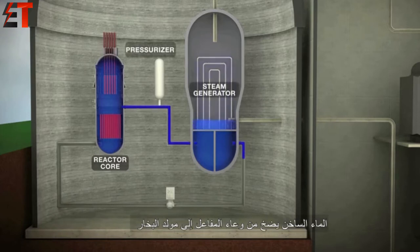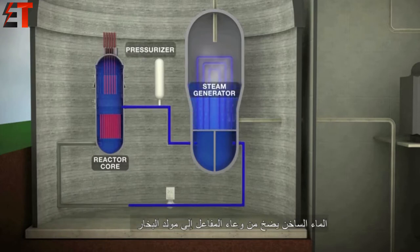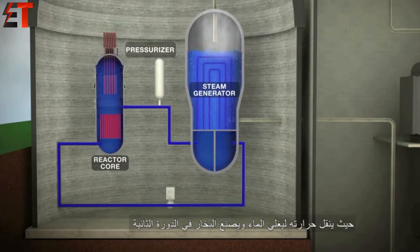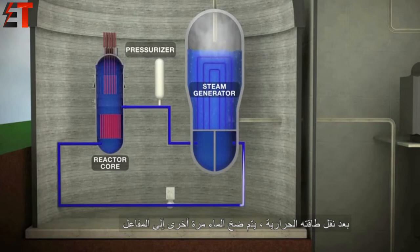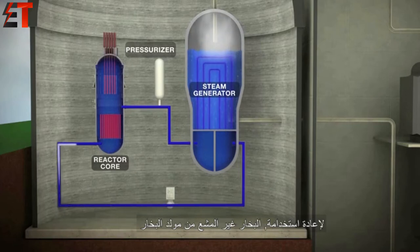The hot water is piped from the reactor vessel to a steam generator, where it transfers its heat to boil water and makes steam in a second system. After transferring its energy, the water is pumped back to the reactor vessel to be reused.